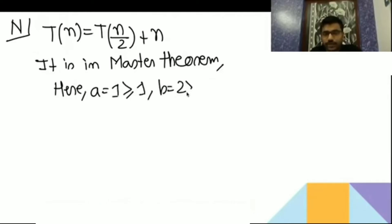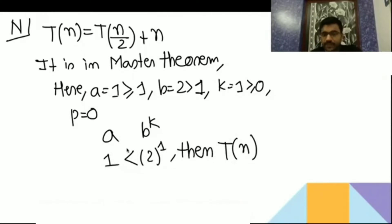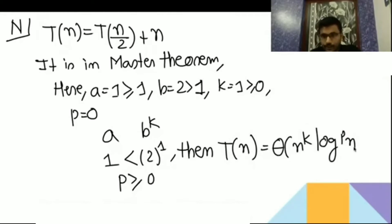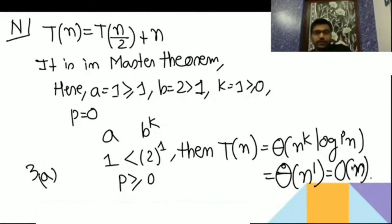Here a = 1 (≥ 1), b = 2 (> 1), k = 1, p = 0. Comparing a and b^k: a = 1, b = 2, k = 1. Since a < b^k, T(n) = Θ(n^k log^p n). With k = 1 and p = 0, we get Θ(n), which is O(n). So N is matched with U.